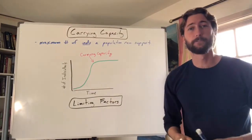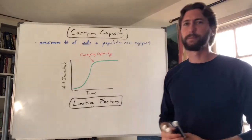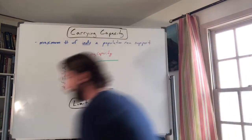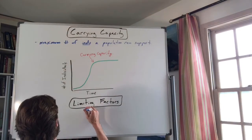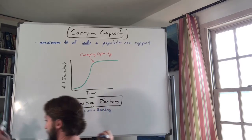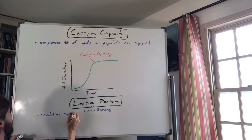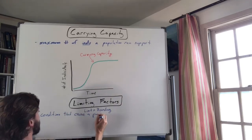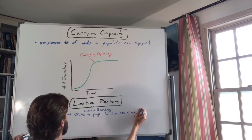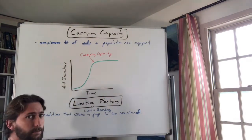Examples of limiting factors include resources — maybe there's not enough food, water, or shelter for all living things. Could be things like competition or even natural disasters. Limiting factors are conditions that set the limit or boundary — they determine where the carrying capacity is going to be.